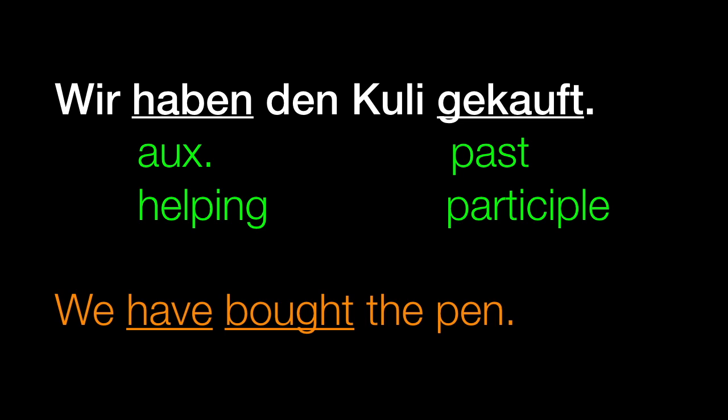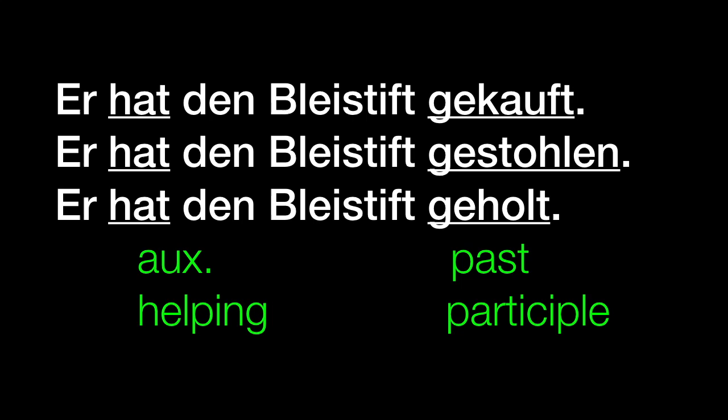In English, the auxiliary helping verb is always a form of 'have' — I have, he has, I had. But in German, the auxiliary helping verb up front is most of the time haben: ich habe, du hast, er hat — some form of that. But we're going to see occasionally we shake it up and switch to a different verb, so watch out for that. The past participle at the end usually begins with GE.